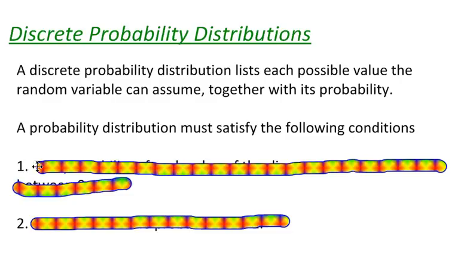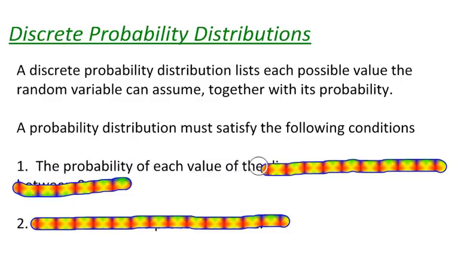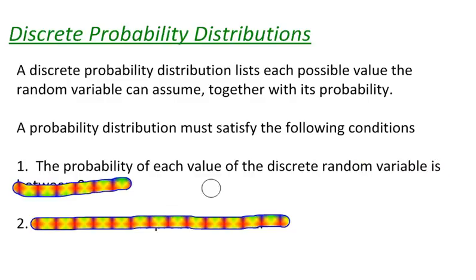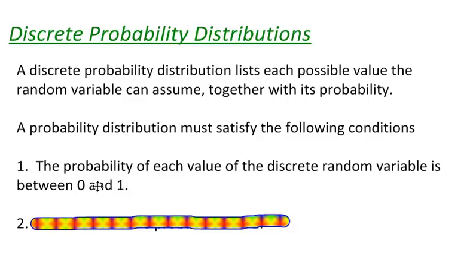One of the conditions it has to satisfy is this. The probability of each value of a discrete random variable is between 0 and 1. So each individual probability in a probability distribution must be between 0 and 1. The probability could be equal to 0 or equal to 1, but it can't be greater than 1 or less than 0. Another word we could use here is inclusive, meaning 0 and 1 are included.